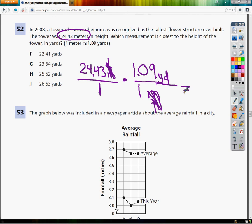Well, the bottom, or the denominator, should I say, is 1 times 1, so that's meaningless. We'll just not even worry about that. We'll just do the final answer. So I do 24.43 times 1.09. And I come out with 26.63, which is answer J.